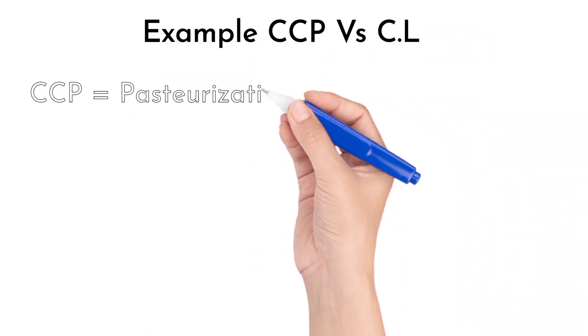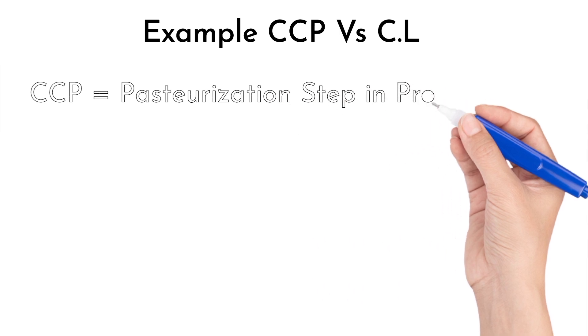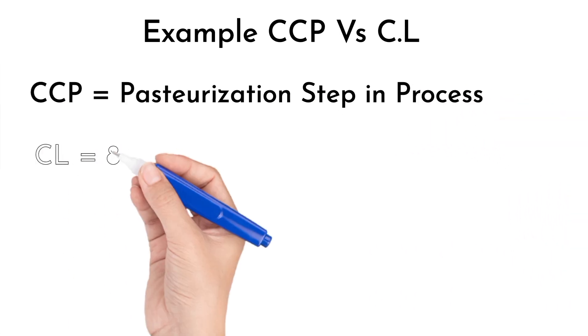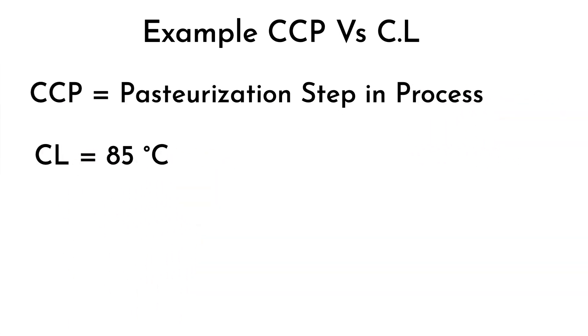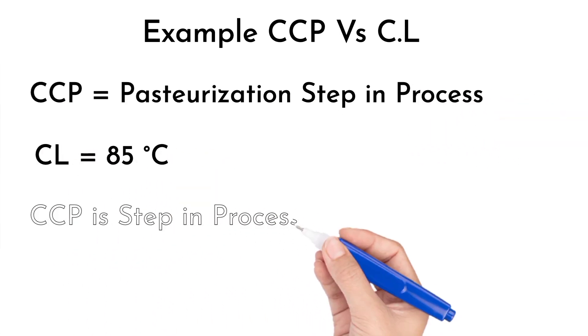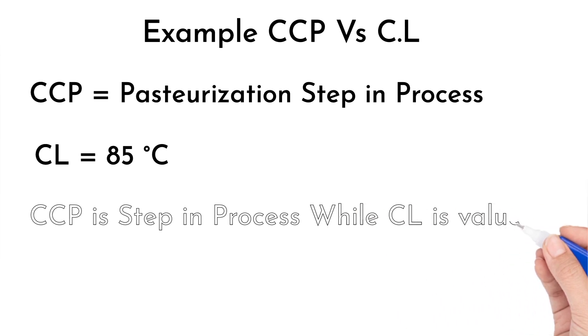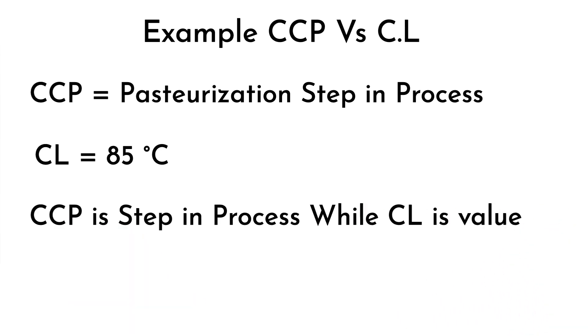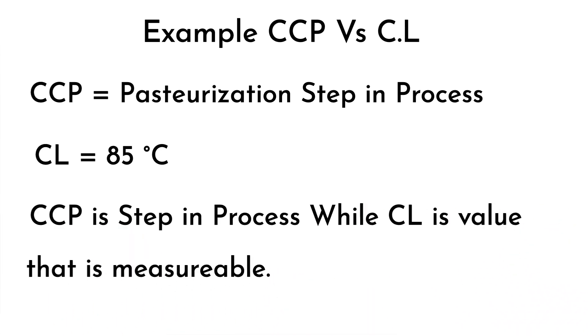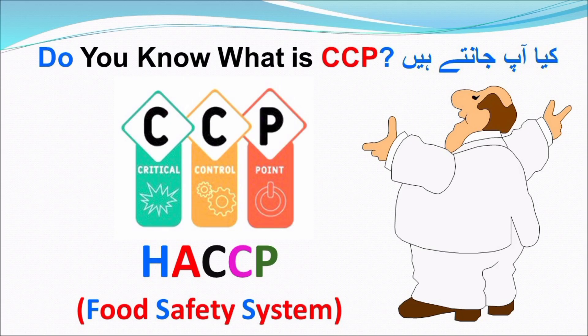Now consider the example: CCP versus critical limit. The CCP is the pasteurization step in the process, and the critical limit is 85 degrees centigrade. So CCP is a step in the process, while the critical limit is a measurable value.